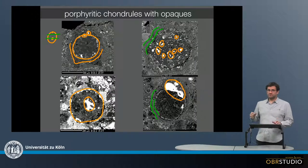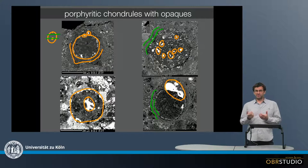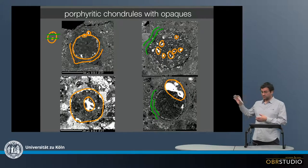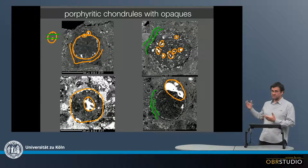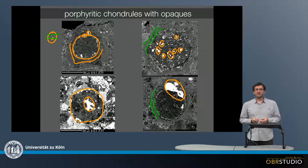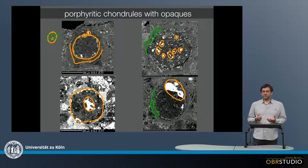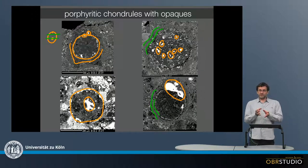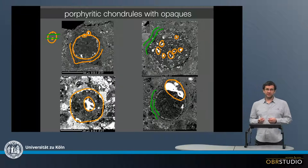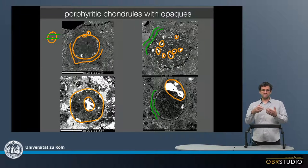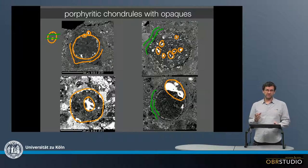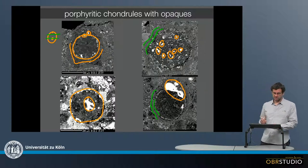The blebs of opaque phases are often quite brownish and bleb-like, likely formed when the chondrule is molten and then the silicate and the opaque phase separate like water and oil, because these are not miscible.